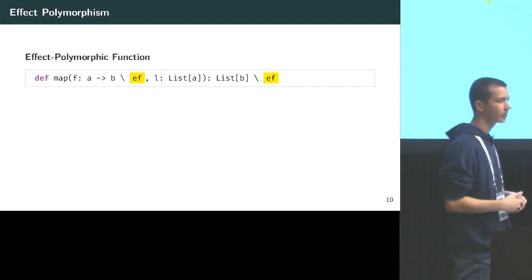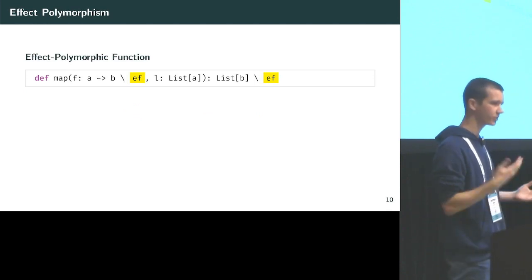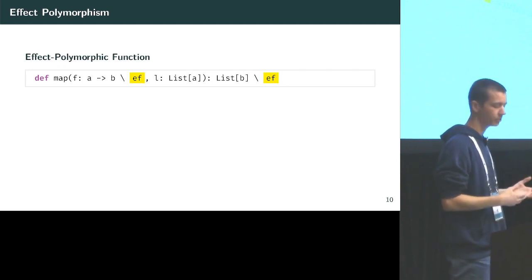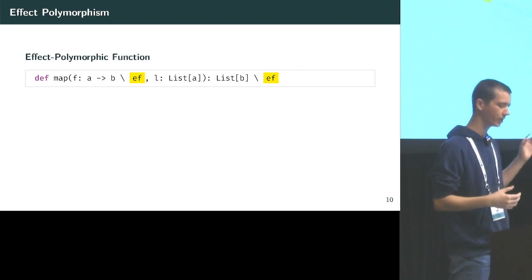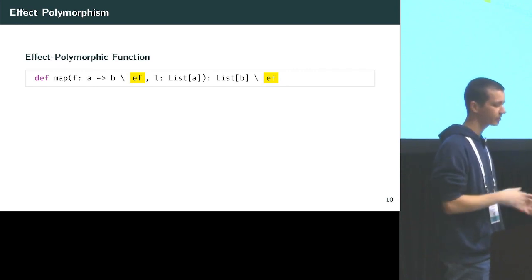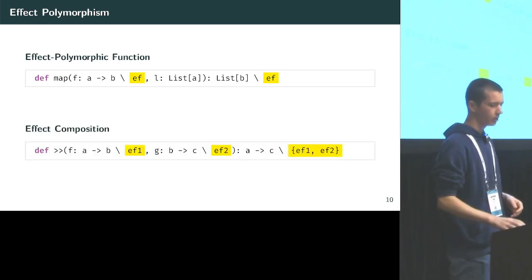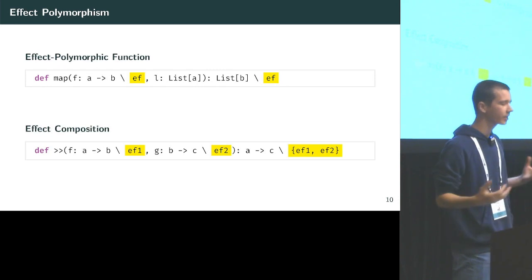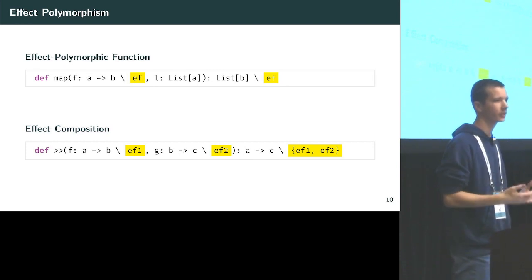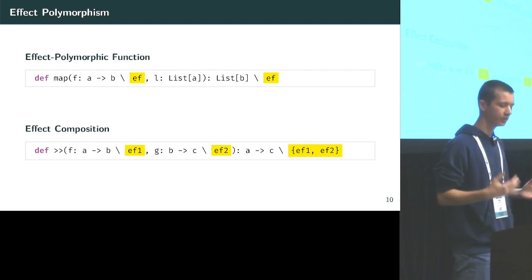Sufficiently abstract programs need effect polymorphism. This map function is a standard function for mapping over a list, but it has an effect variable that is the same on the parameter f as on the function as a whole — meaning the effect of the function is the same as the effect of applying f once. We also need effect composition: if we combine two functions, the resulting function has an effect that is the union of the two component effects.